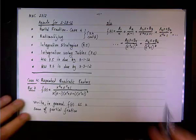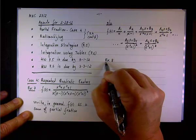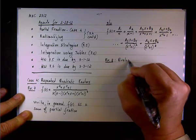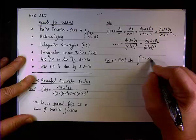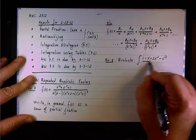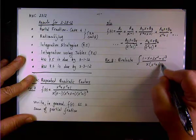That was Example 7. In Example 8, we're actually going to perform an integration. We need to evaluate the integral where the numerator is 1 − x + 2x² − x³ and the denominator is already factored as x times (x² + 1)².